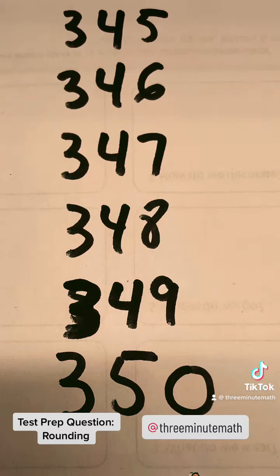The numbers listed here will round up to 350. So 345, 346, 347, 348, and 349 will round up to 350.